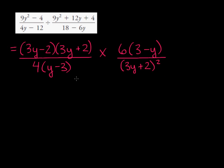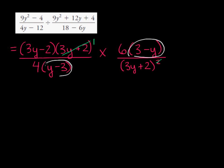Now we want to see what simplifies. I've got a 3y plus 2 here, and that's going to simplify with one of the factors of 3y plus 2 here. So 3y plus 2 divided by 3y plus 2 is equal to 1. I've also got this factor of 3 minus y, and this factor in the denominator of y minus 3. We might want to look at taking out a common factor of negative 1 in one of these factors so that we can simplify this further.